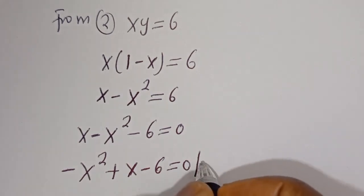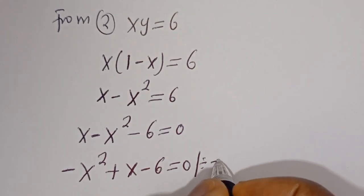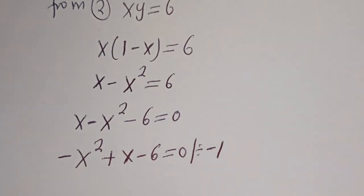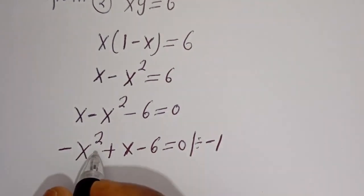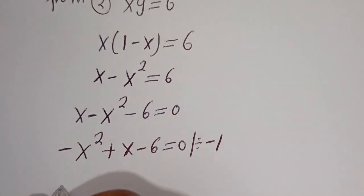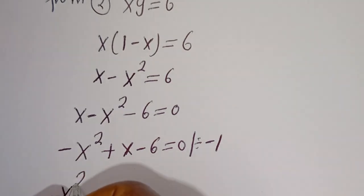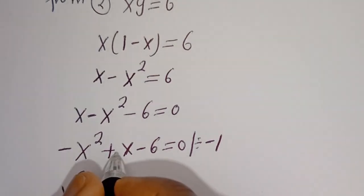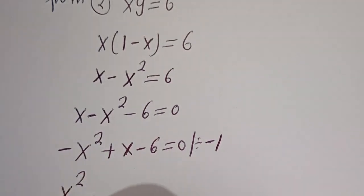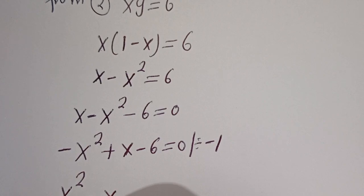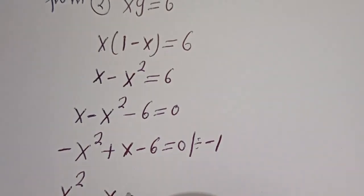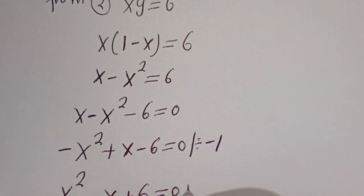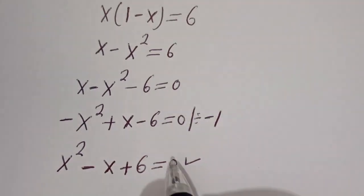Now let's divide all terms by minus 1. Minus x squared divided by minus 1 gives x squared; x divided by minus 1 gives minus x; minus 6 divided by minus 1 gives plus 6 equals 0. This is a quadratic equation.